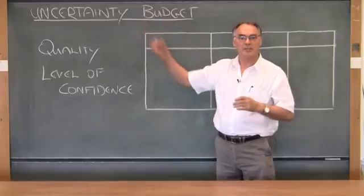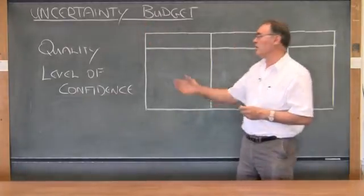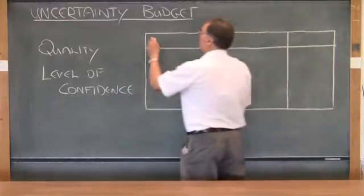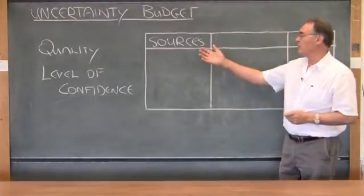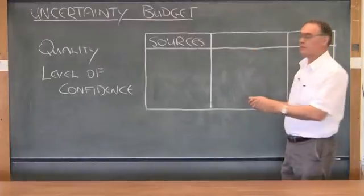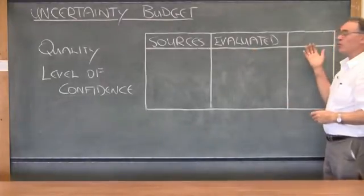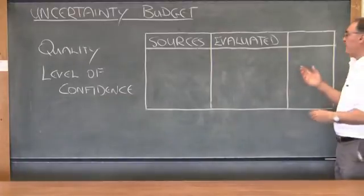It explains to your reader not only what sources of uncertainty you took into account, but you also explain to your reader how these sources were evaluated. And just to complete the picture, you also give the result of each evaluation.